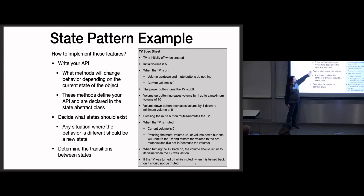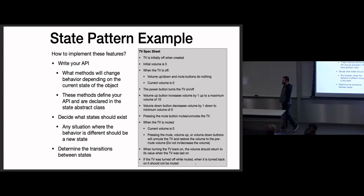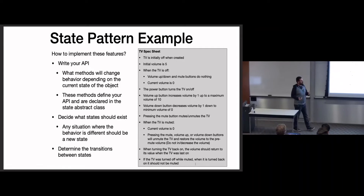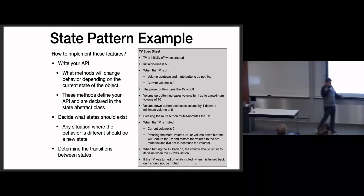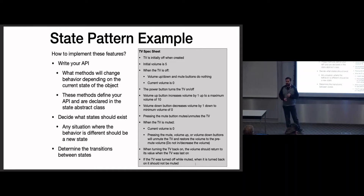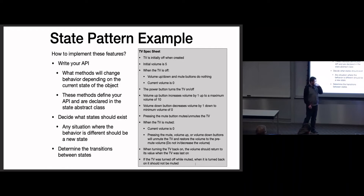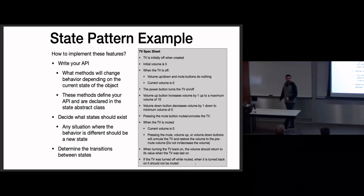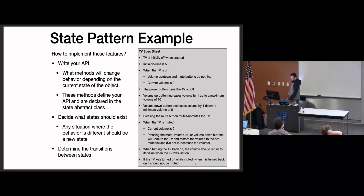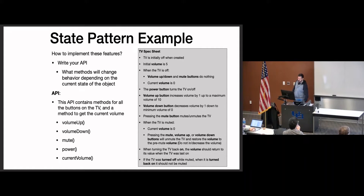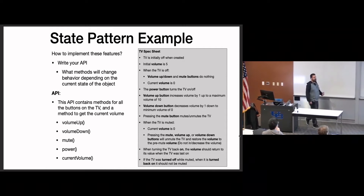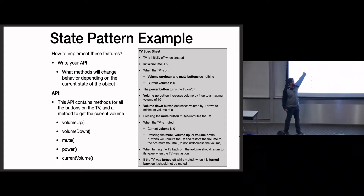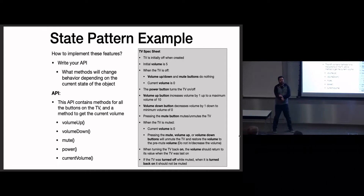The API is given to us for the homework, mostly because those are the methods called in Autolab tests. So the API is done — it's the four buttons and the current volume method. Next, where we should start on the homework: decide what states we should have. What different states can this object be in? What different scenarios cause a different set of behaviors?